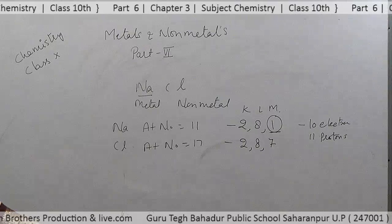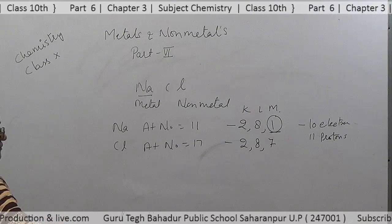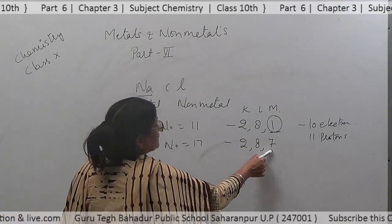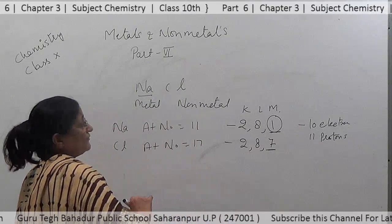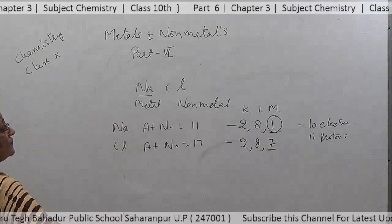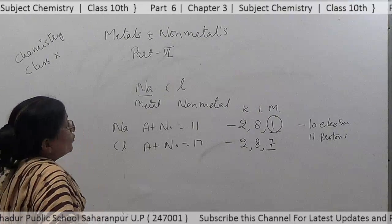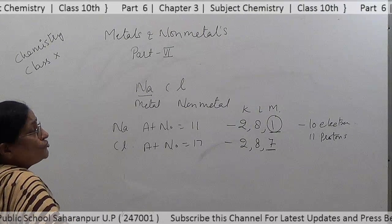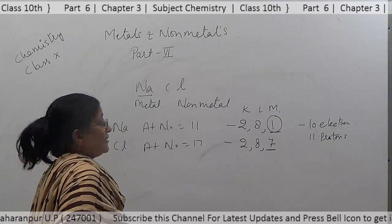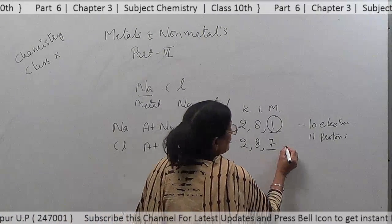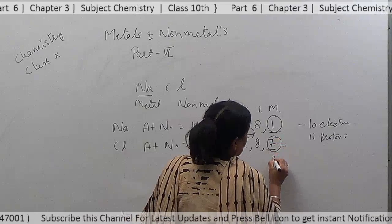In the case of chlorine, it has 7 electrons in its outermost orbit, meaning it wants to take one more electron to complete its outermost orbit and become stable. So it will gain 1 electron, making it 8 electrons in the outermost shell.